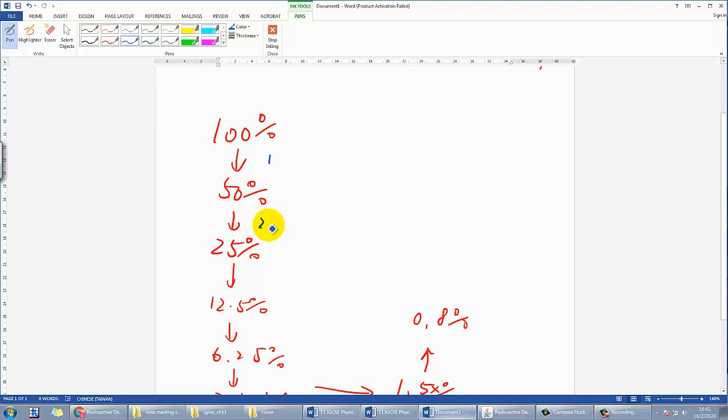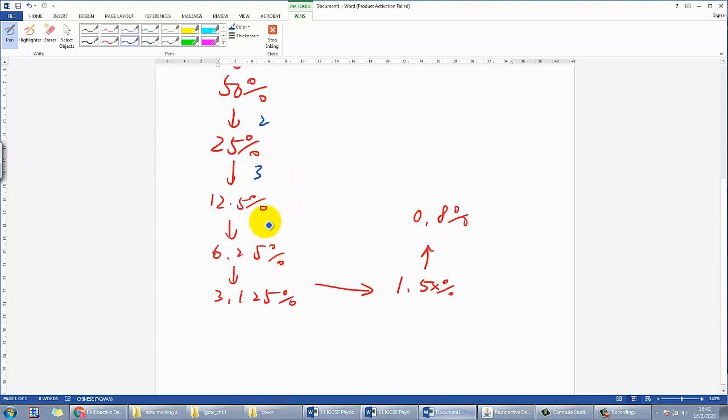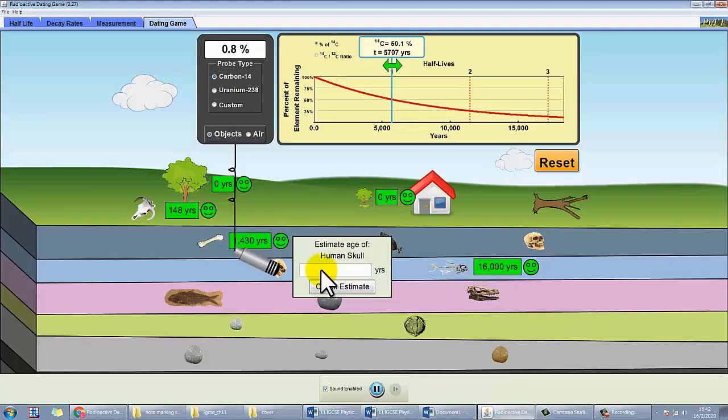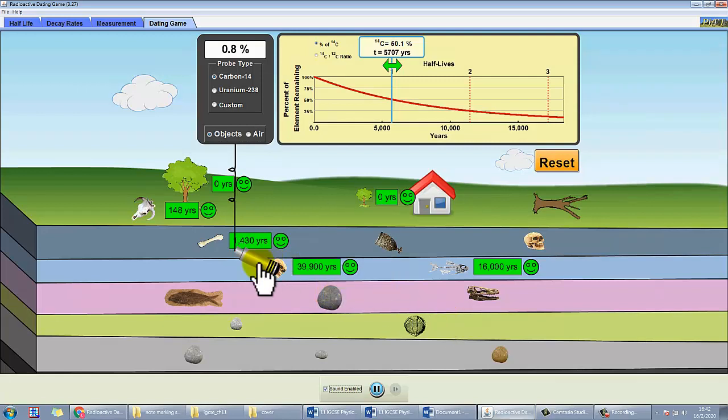And that is by counting how many half-life are there. So, you can count, 1, 2, 3, 4 half-life, 5 half-life, 6 half-life, 7 half-life. And each half-life, you know that it will take that many years. So take out your calculator, you can try to calculate 7 times 5,700, that would be about 39,900. So let me try it out, 39,900. That's correct. So this is the correct answer.